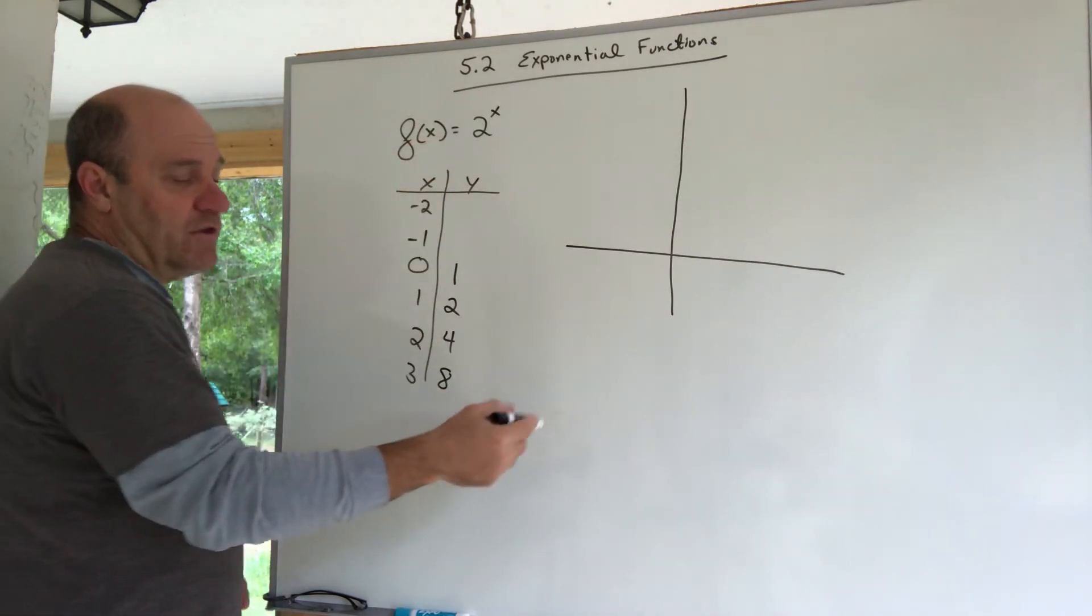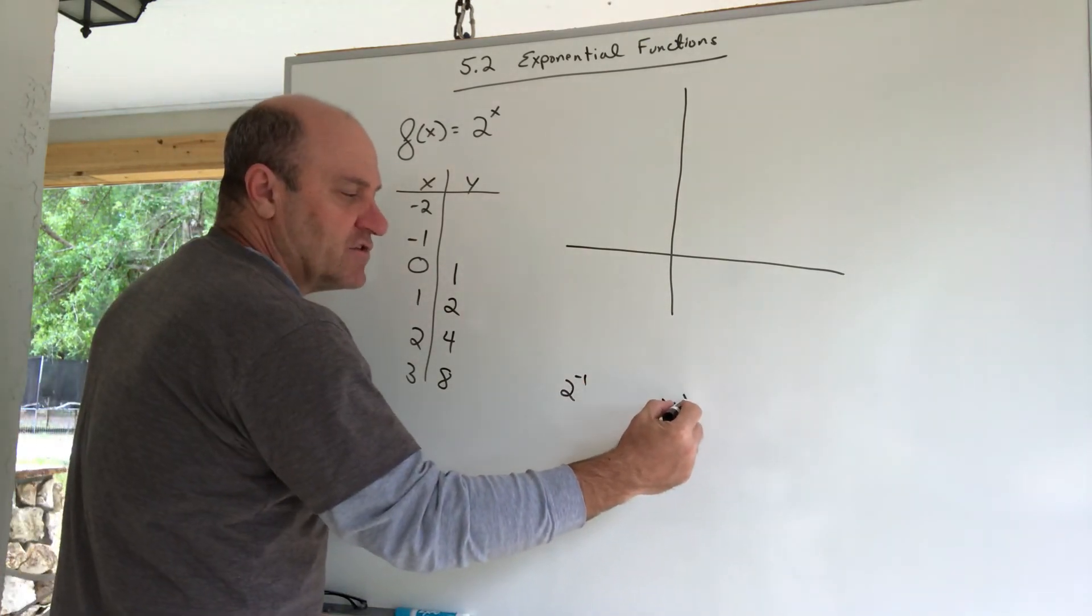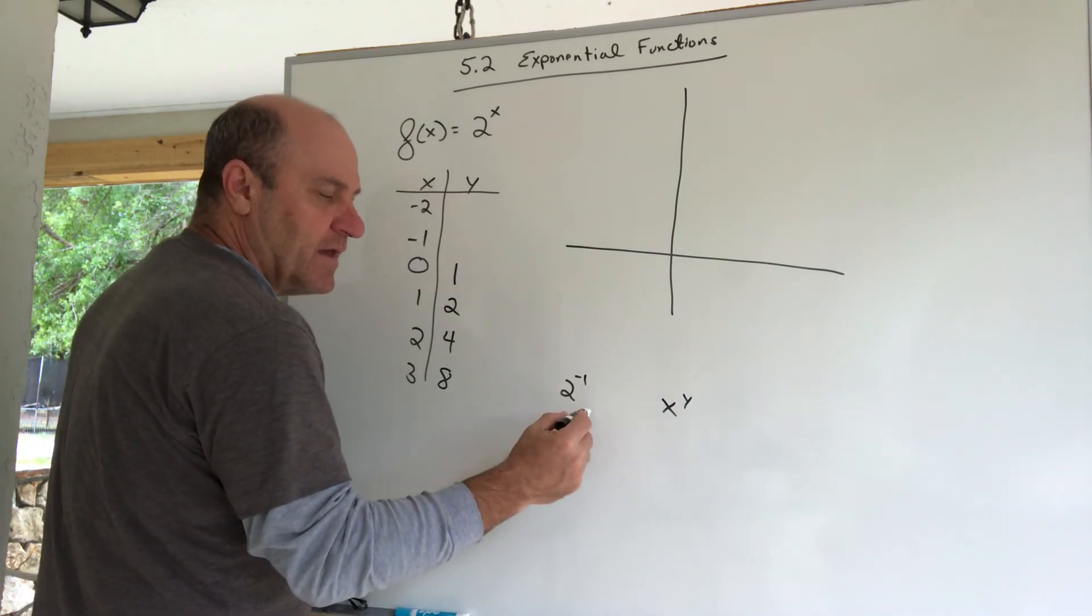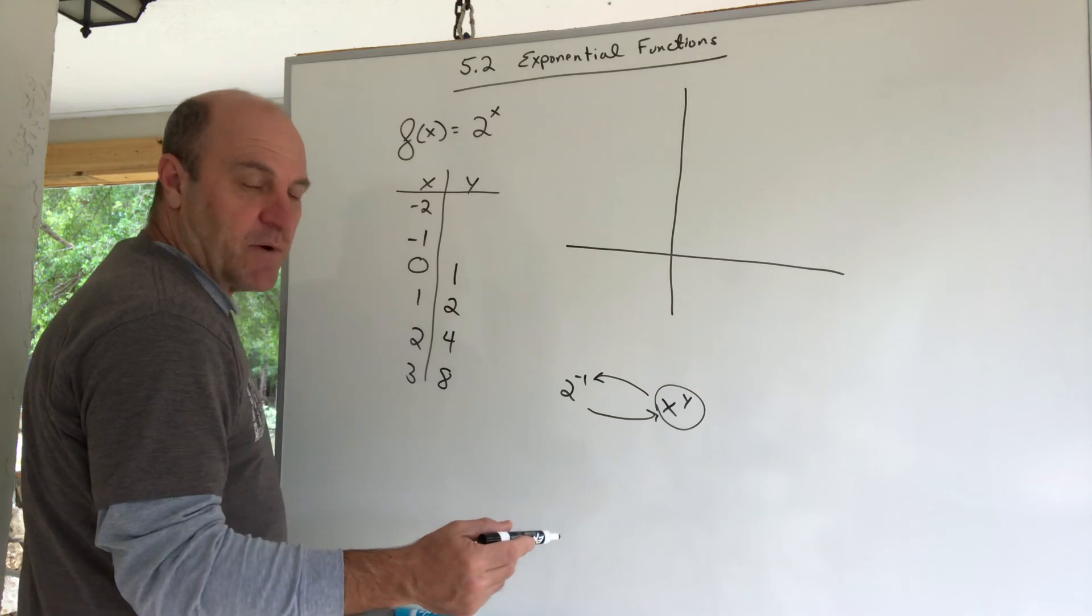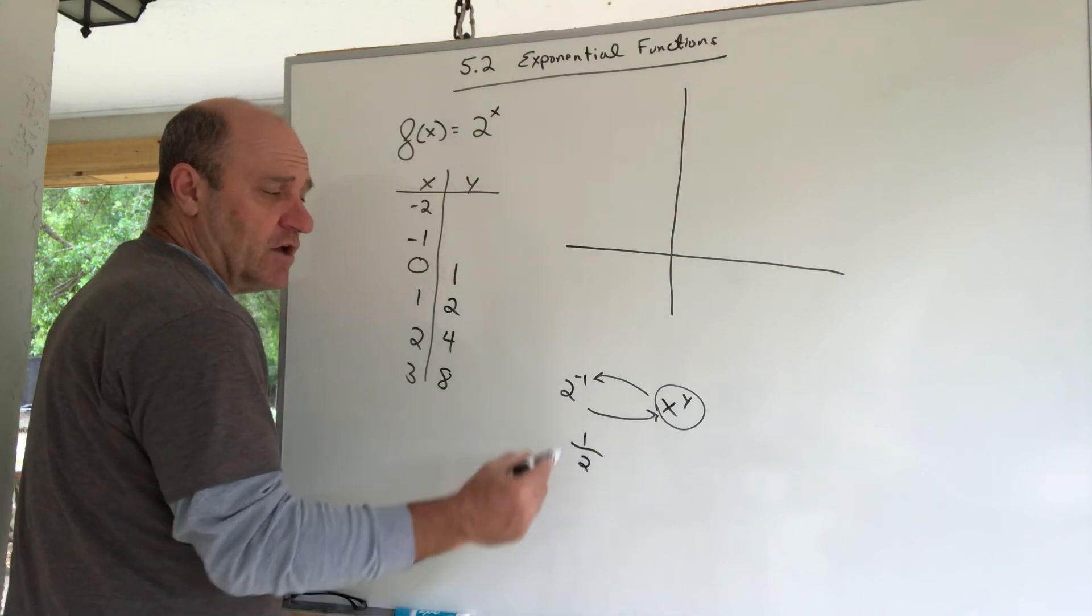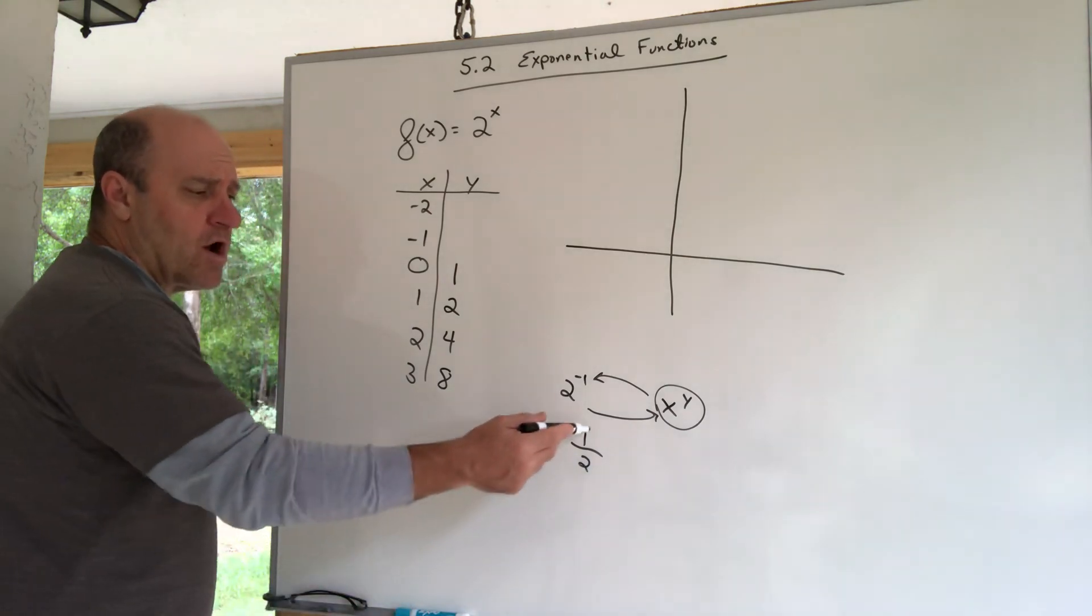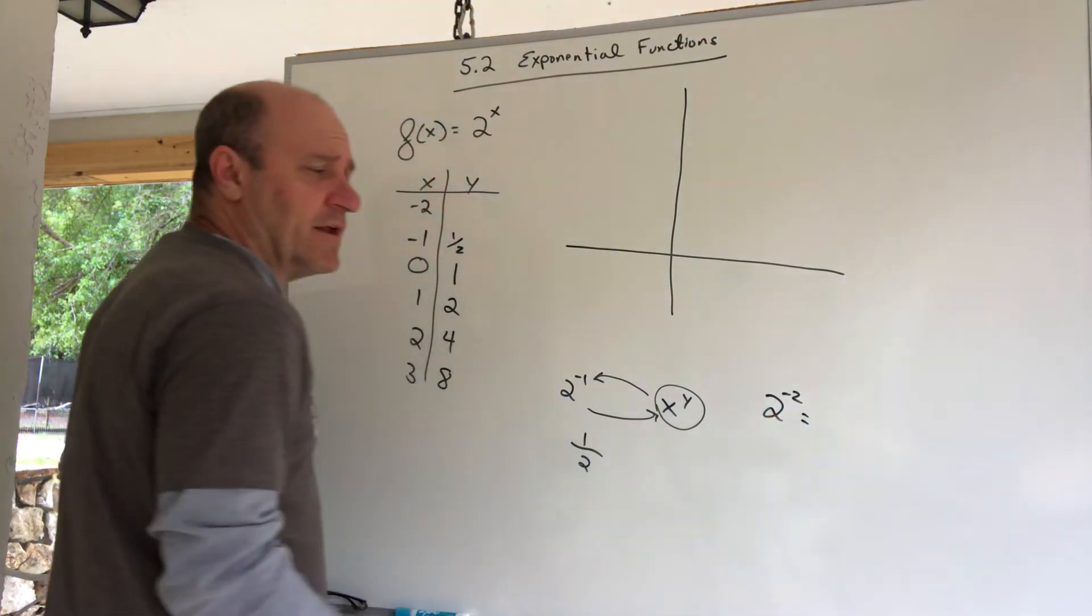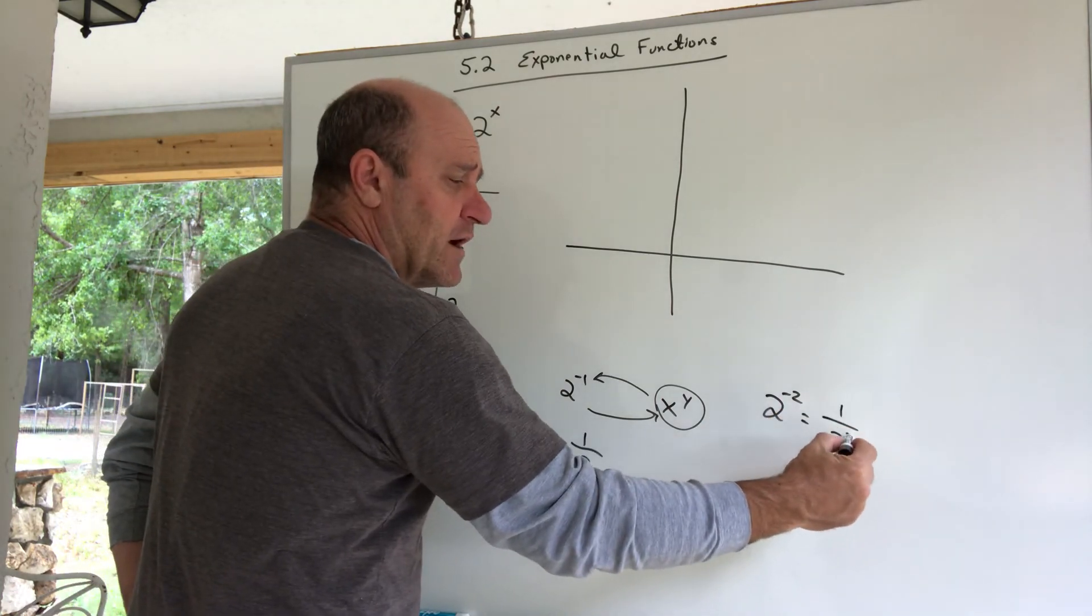When you plug in a negative one, you could use your calculator. You need to learn how to use your calculator. You have this X to the Y button or Y to the X button. You type in the two, that's the base, then you hit this button and type in the negative one, that's the exponent. But what it means, you should know what it means. It means one over 2 to the first. A negative exponent takes the whole base and puts it in the denominator. So that's a one-half.